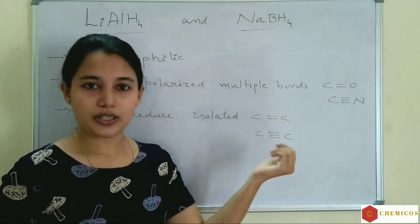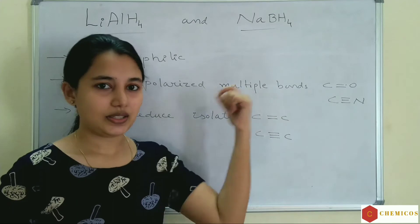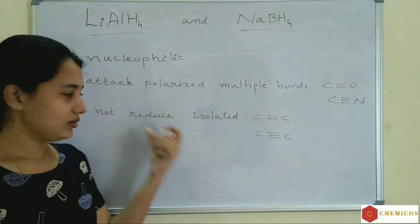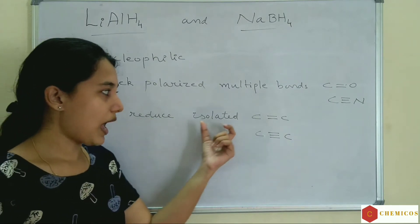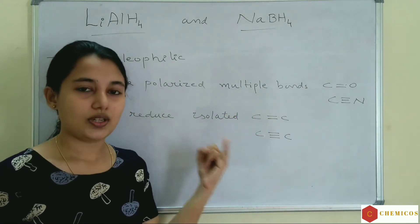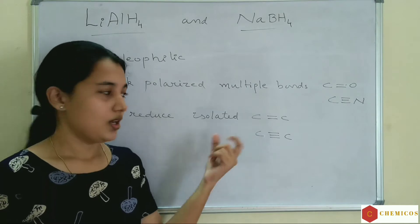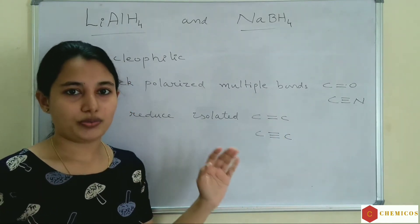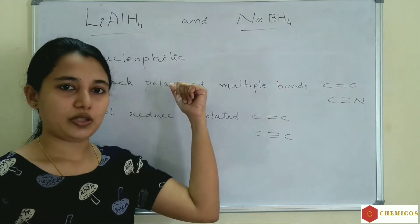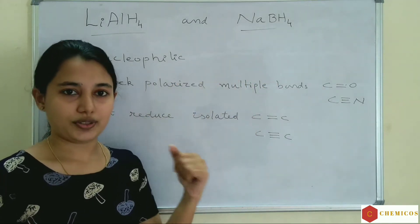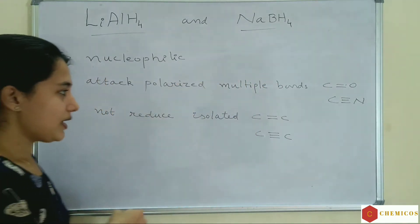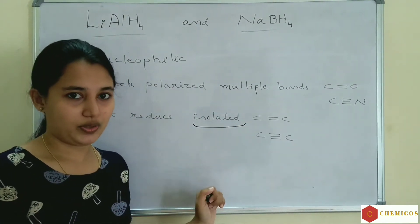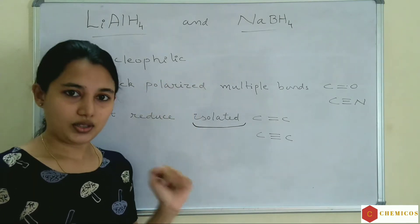Carbonyl and carbonic groups are reduced using these reagents. Another important application is that isolated C=C double bonds and C≡C triple bonds are not reduced when lithium aluminum hydride and sodium borohydride are used. Isolated double bonds and triple bonds are not reduced when these reagents are used.